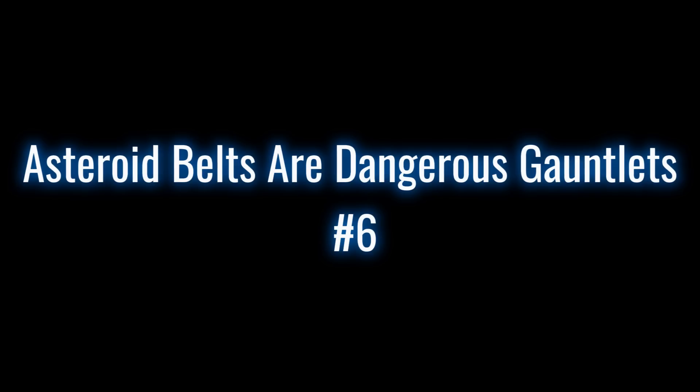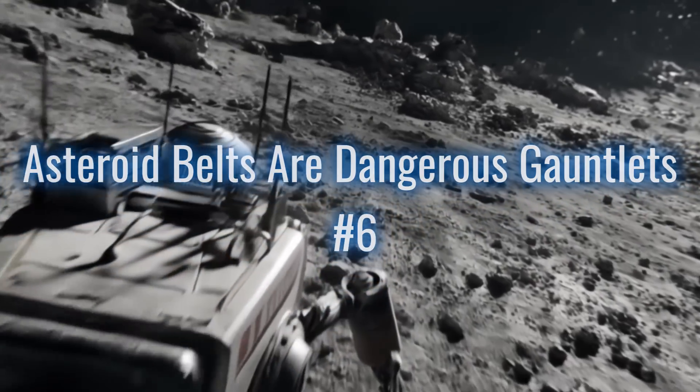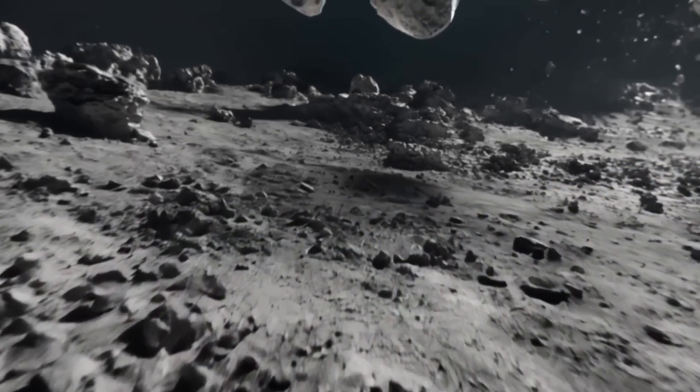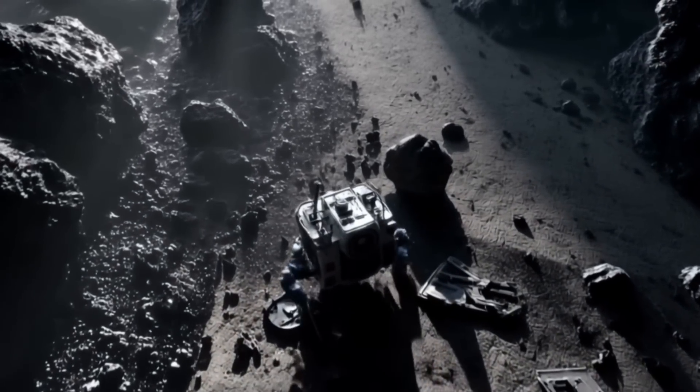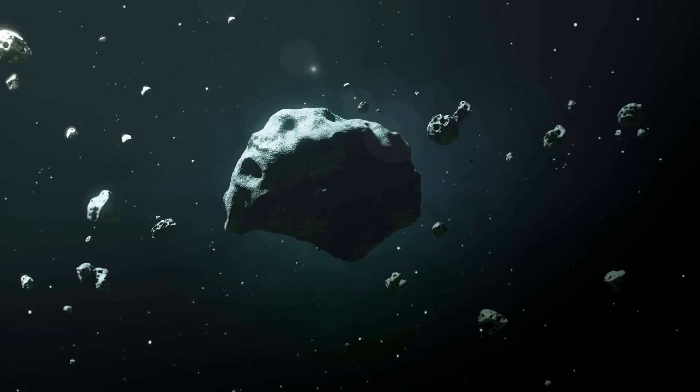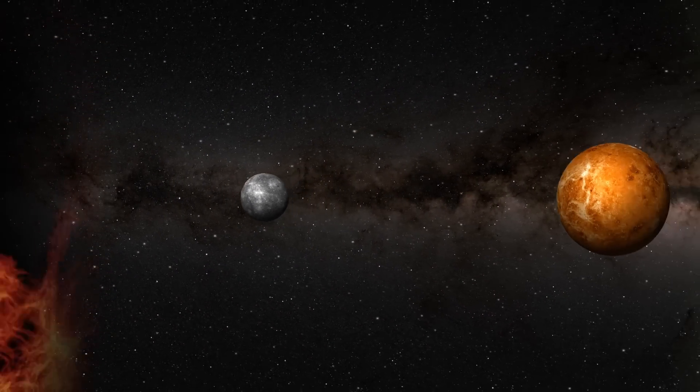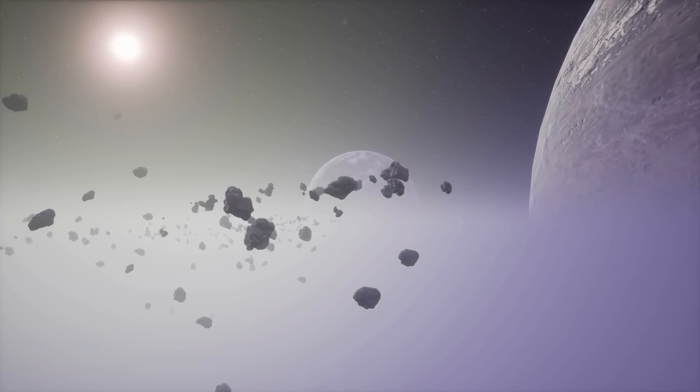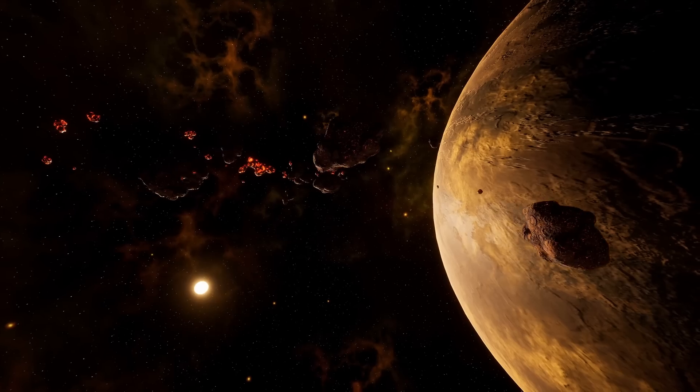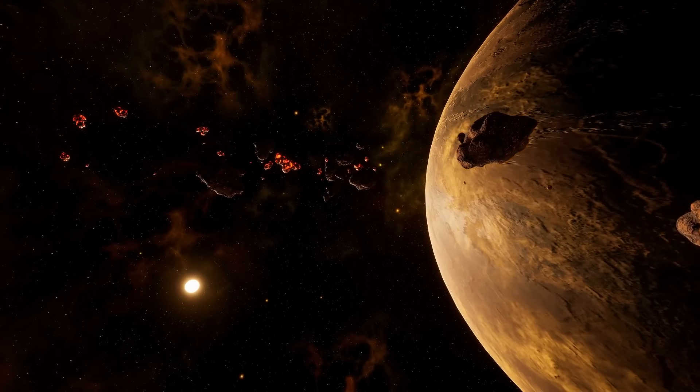6. Asteroid belts are dangerous gauntlets. Movies make asteroid belts look like obstacle courses. In reality, space rocks are spread out by thousands of miles. The asteroid belt between Mars and Jupiter is so wide, it's like trying to find a single pebble in a desert. Spacecrafts pass through without much worry.